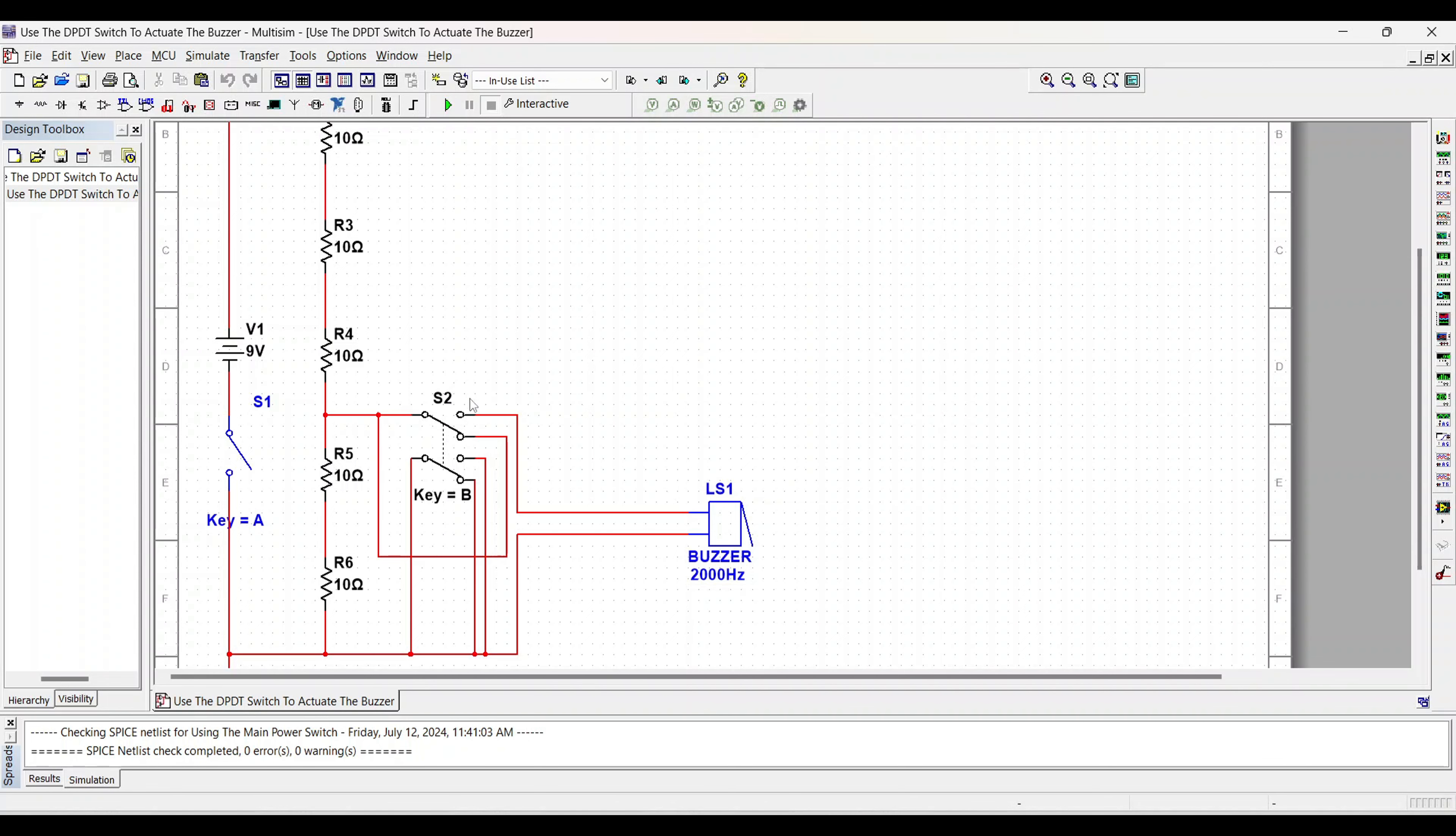The simulation software won't let me just leave them unconnected. Really what we're doing looks like this switch, but with this setup this is how you achieve a single pull single throw by utilizing a double pull double throw.